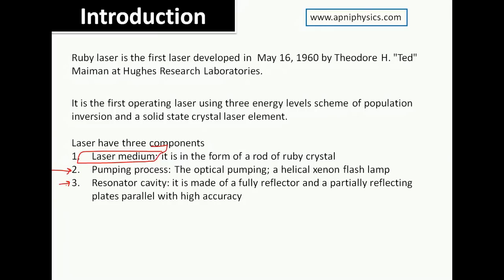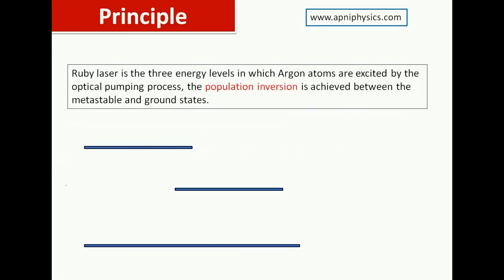The ruby laser uses a three energy level system: the ground state, the uppermost excited state, and the middle metastable state. The lifetime of the excited state is of the order of 10⁻⁸ seconds, while the lifetime of the metastable state is of the order of 10⁻³ seconds — much longer than the excited state.